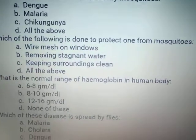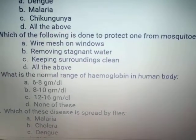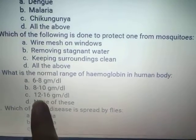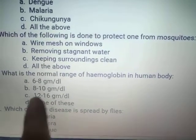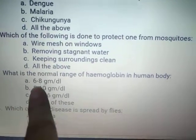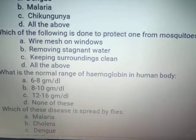What is the normal range of hemoglobin in the human body? It is 12 to 16 grams per deciliter of blood. So you will tick it.